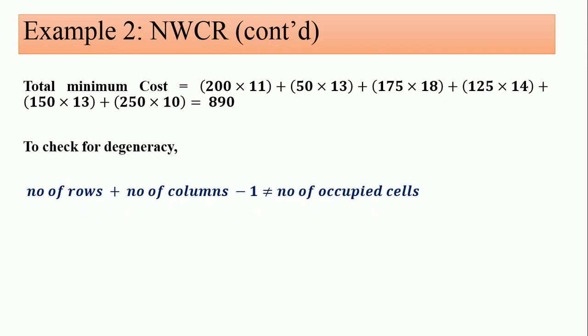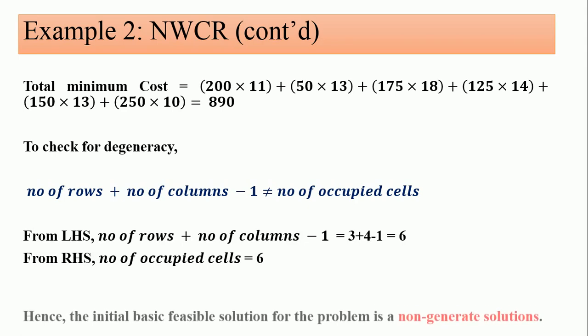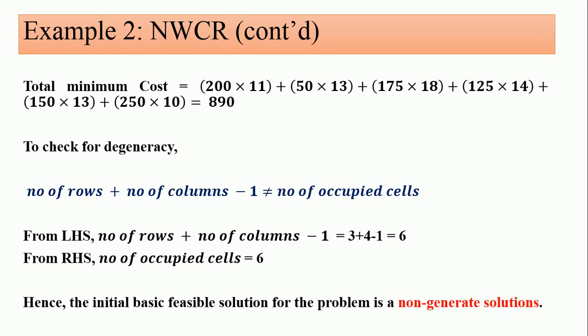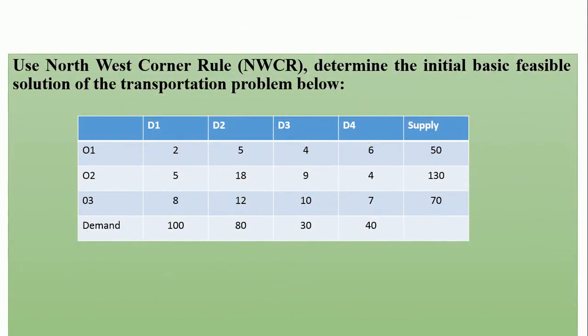For degeneracy, we check that the number of rows plus the number of columns minus one is equal to the number of occupied cells or not. And we are able to deduce that they are equal, which makes the solution a non-degenerate one. It is a non-degenerate solution.